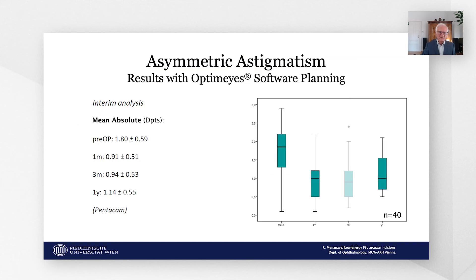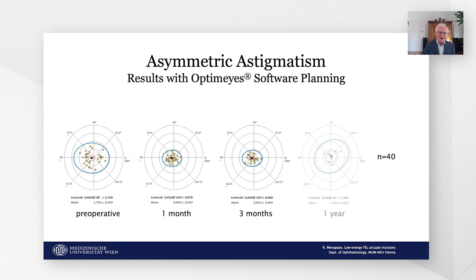This slide shows an interim analysis of results with the first 40 eyes treated. Again, astigmatic reduction is significant and permanent. Mean absolute astigmatism is reduced by 0.5 diopters from 1.8 diopters pre-op to 1.1 diopters at one year post-op. This graph again shows the centroid and 95% confidence ellipse of the whole dataset pre-operatively and at one year post-op.